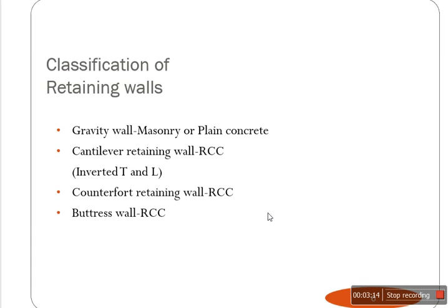Retaining walls are classified into several types. A gravity wall resists all forces by its own weight — it is normally a masonry wall, either stone masonry, brick masonry, or plain (unreinforced) concrete. When reinforcing is introduced, you typically go for either a cantilever retaining wall or a counterforce retaining wall.